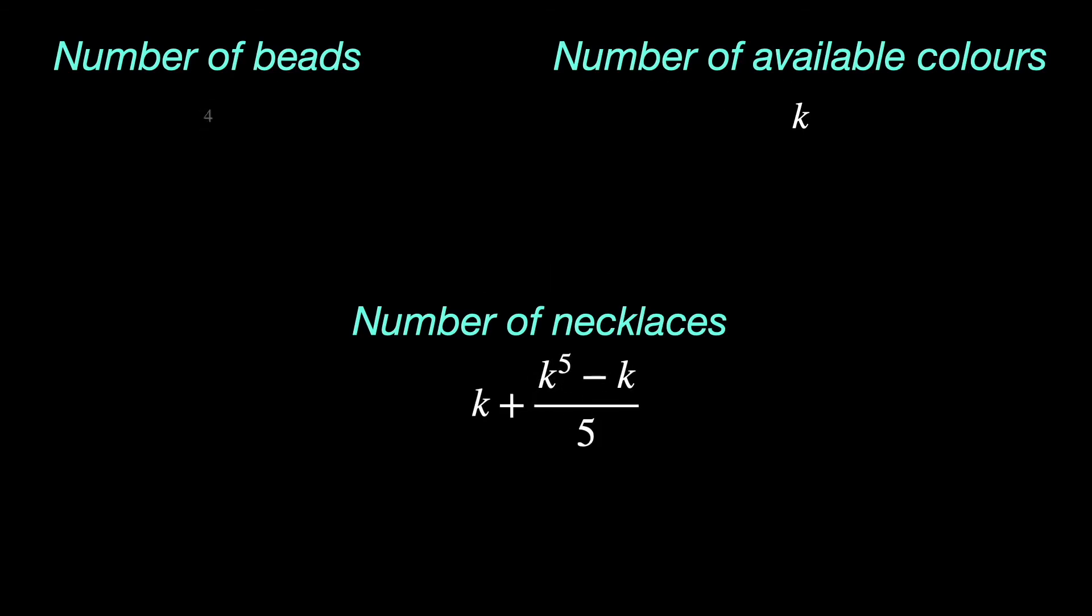Let's try small numbers first. Say we have four beads and two colors. Well, similar logic as before should carry over and so we must have these many necklaces, shouldn't we? But wait a minute, that's not a whole number.